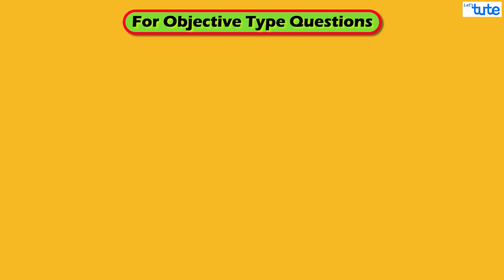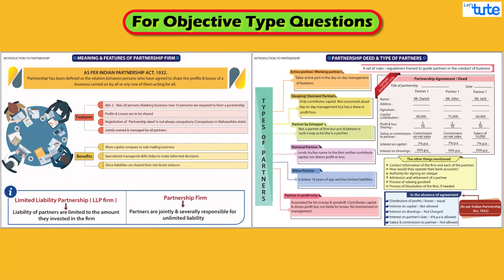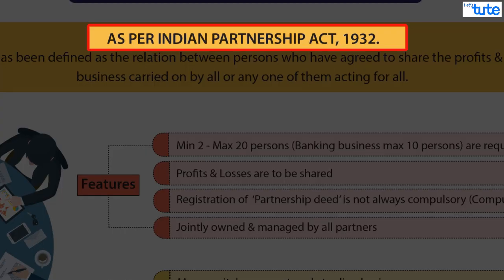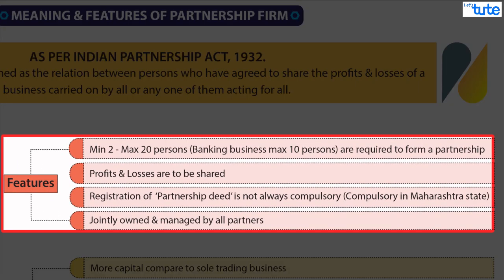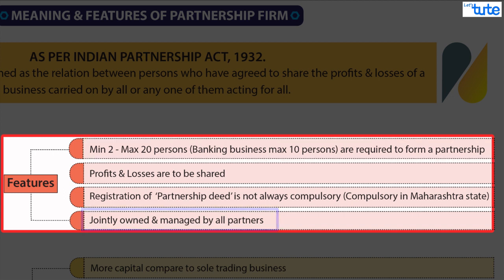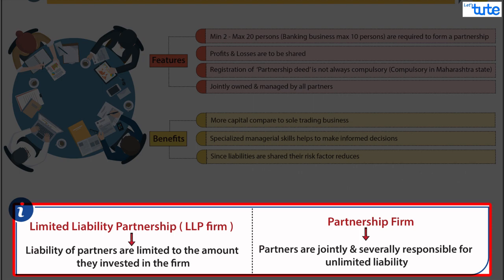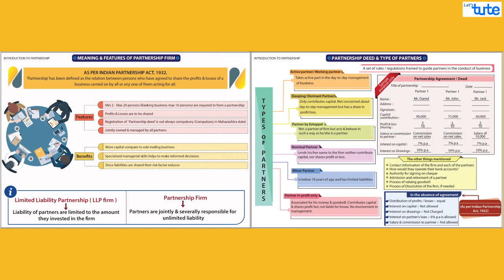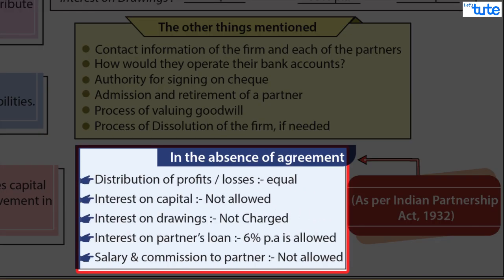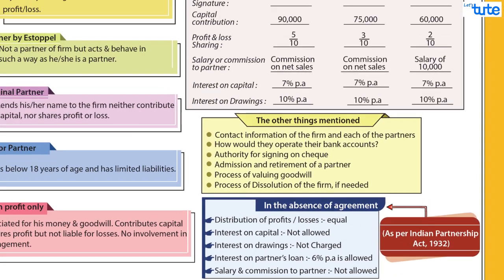For objective type questions, pay attention to the year of the Partnership Act and also some important features: maximum and minimum persons required, on whose hands ownership and management lies, terms for liability sharing, and how profit or loss is to be shared in the absence of a partnership deed, and the types of partners.